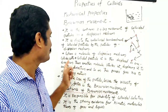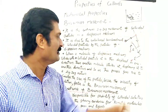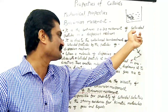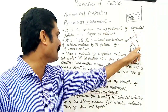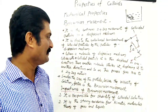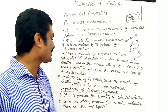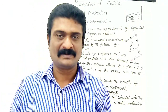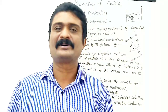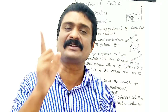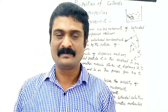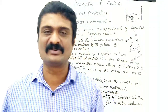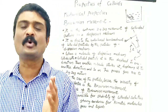When a molecule of the dispersion medium collides with the colloidal particle, it is displaced in one direction. Then another molecule strikes it, displacing it in another direction, and so on, giving rise to a zigzag motion. Brownian movement is independent of the nature of the particle, but depends on the size of the particle and the viscosity of the solution. Smaller the size of the particles and lesser the viscosity of the solution, faster is the Brownian movement.